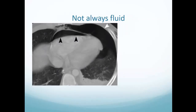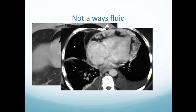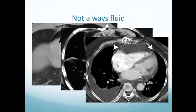Regarding pericardial tamponade — it may not necessarily be fluid. For example, pneumopericardium can compress the right ventricle. A case showing nodular thickened pericardium causing compression of the right ventricle with bilateral pleural effusions represents malignant pericardial disease. Localized post-surgical hematoma can also cause compression. So it's not necessarily a uniform round collection of fluid that will compromise the cardiac chambers.